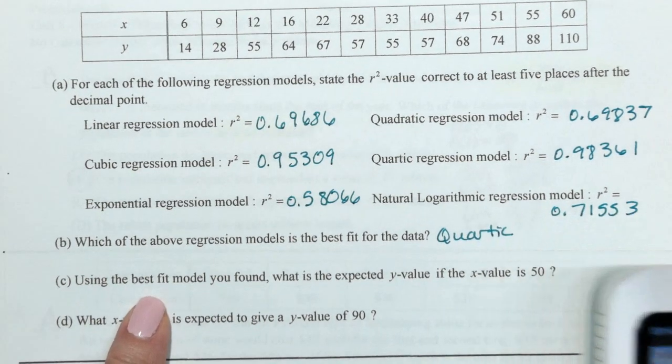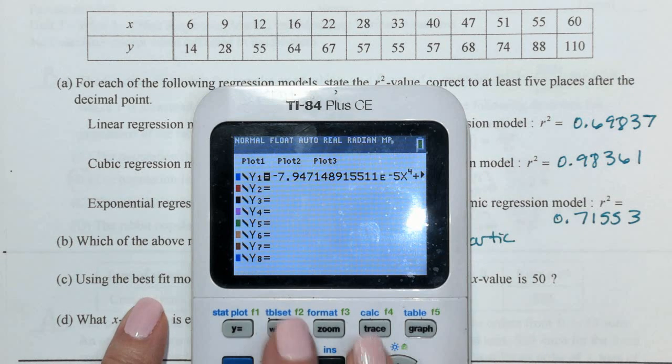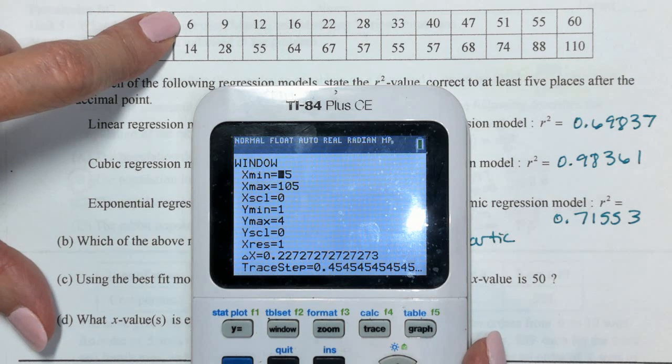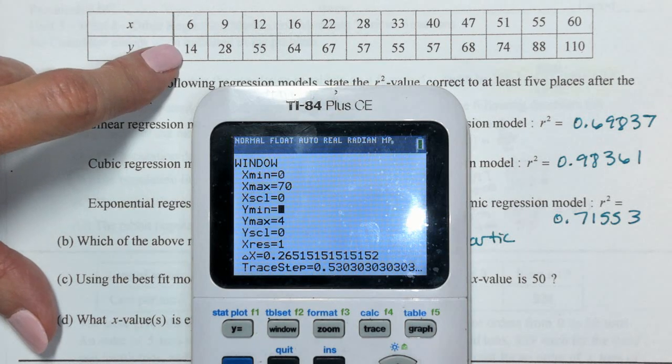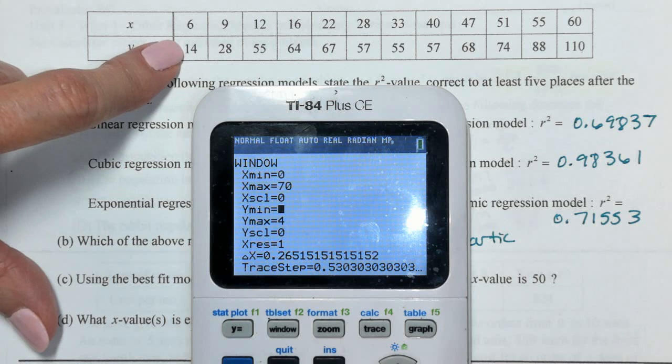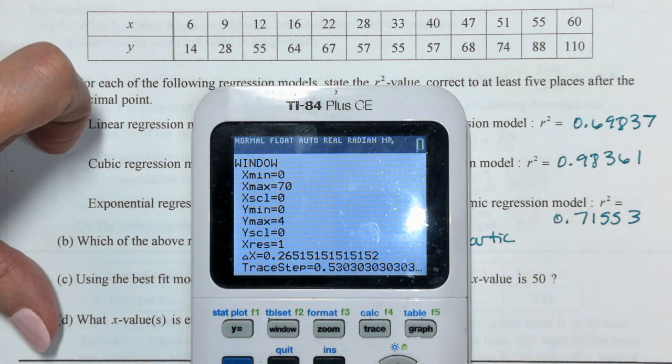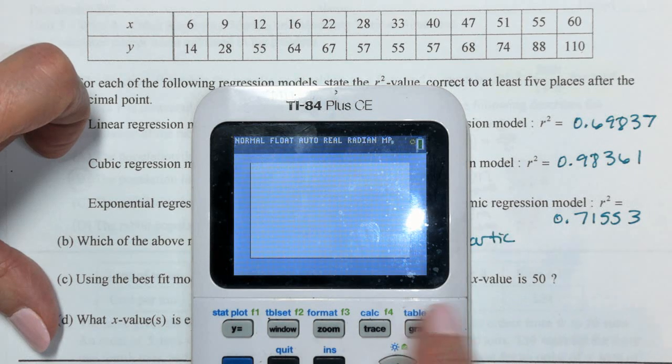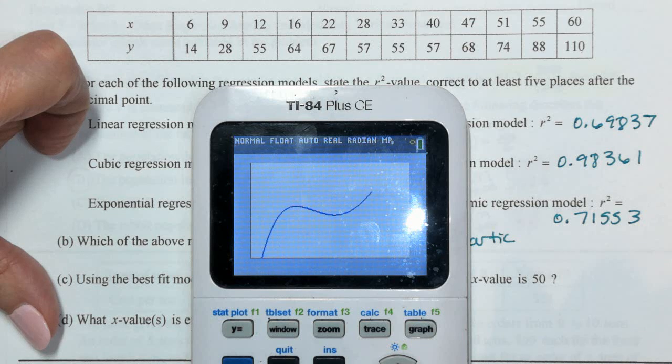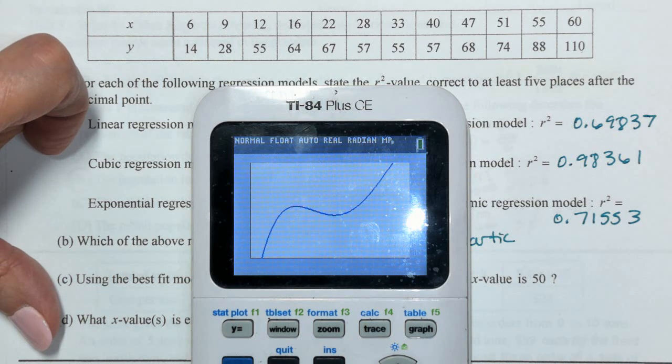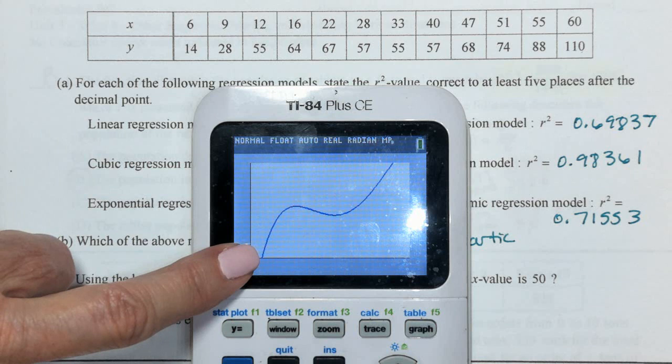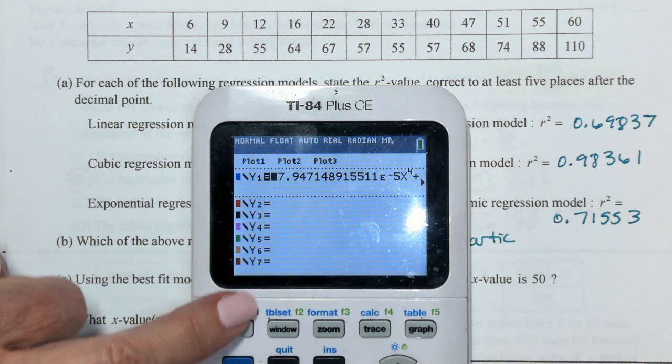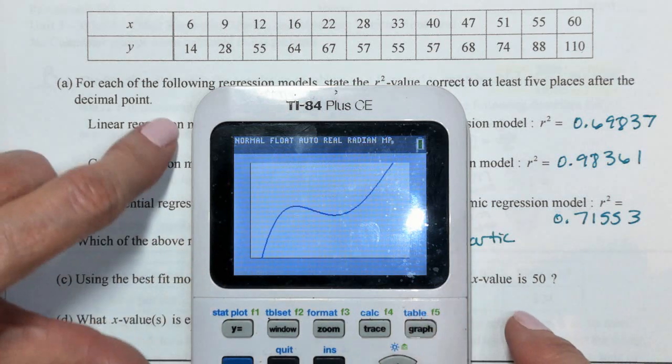Using that best fit quartic model, what is the expected Y value when the X value is 50? Let's go play with our window a little bit. I think I'm just going to start X at 0 and end X at, oh, 70. I don't know. Whatever. A little bit higher than 60. For my Y min, I'm going to start it also at 0, I think, because I'm going all the way to 110. And then, I'll end at 100 and maybe 20. And there's that quartic model. That part of the quartic model looks cubic, but that's the quartic model. Clearly, the lead coefficient of this quartic equation is negative, right? See the negative?